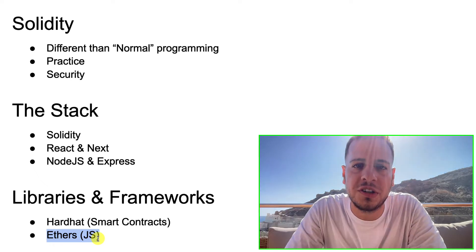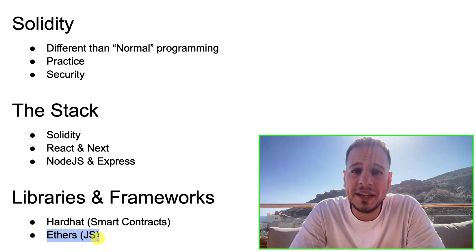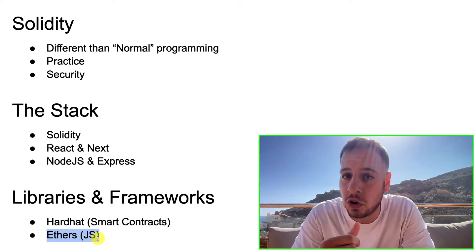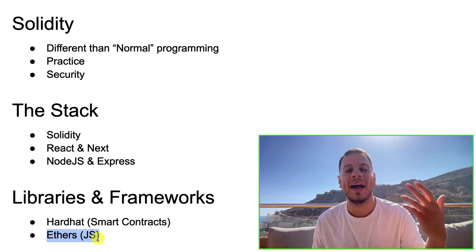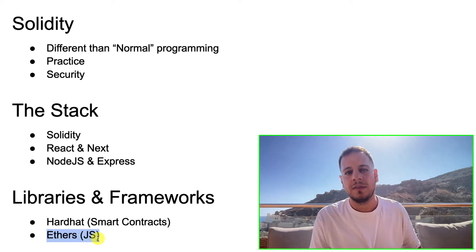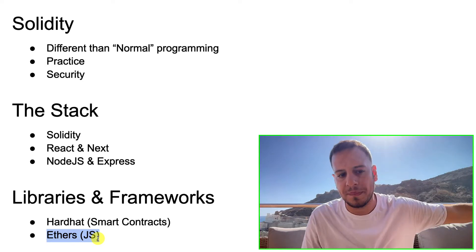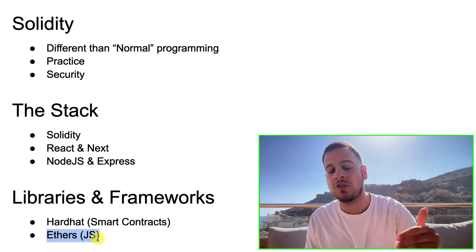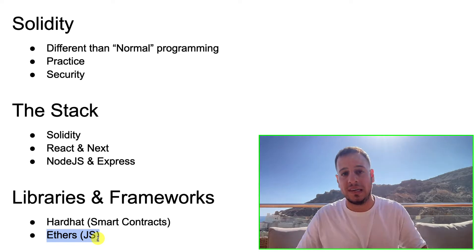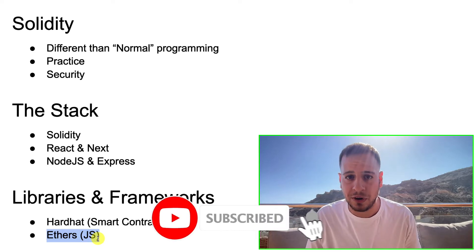I prefer Ethers so much — it's so much easier, so much more convenient. Ethers is the library that helps you interact with smart contracts, whether you're writing a back-end program in Node.js — maybe an arbitrage bot that uses arbitrage in Uniswap — or even a React web application that interacts with your smart contracts. Either way you're going to use Ethers, which is the best JavaScript library, in my opinion.